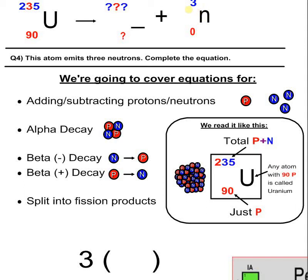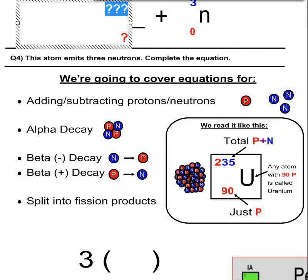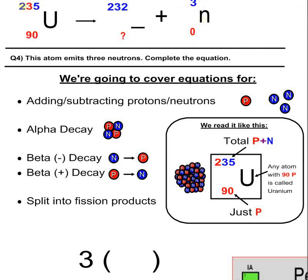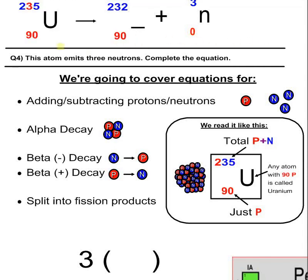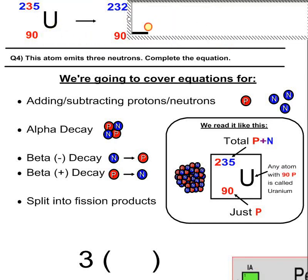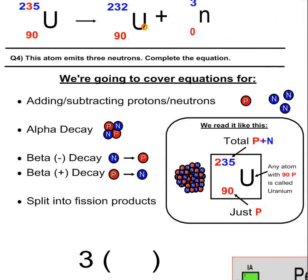Best thing to do is work backwards: 3 plus what equals 235? That's 232. And zero plus what equals 90? That's 90. So the leftover piece has 232 on top and 90 on the bottom, which means it has 90 protons — it is uranium again! Check: 232 plus 3 equals 235, and 90 plus 0 equals 90. That is the right answer.